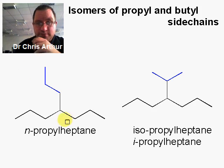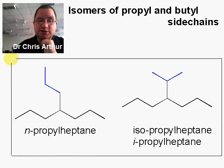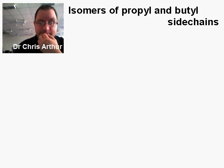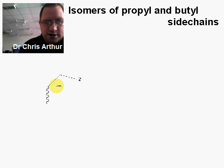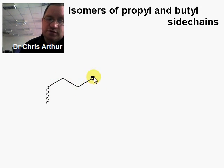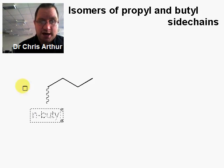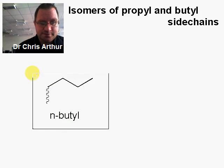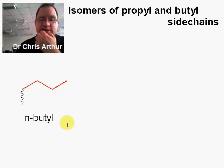Now we're going to look at butyl. We've met n-propyl and isopropyl groups, and the next most common case is isomers of butyl. I'm going to draw a wiggly line representing attachment to another part of the molecule, and then put on a four-carbon chain — one, two, three, four carbons. As you might expect, this is n-butyl: a normal straight-chain four-carbon group.